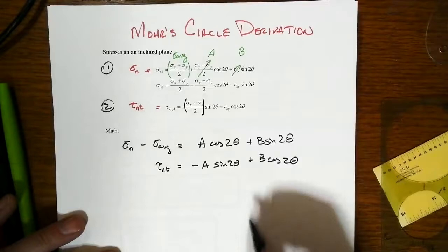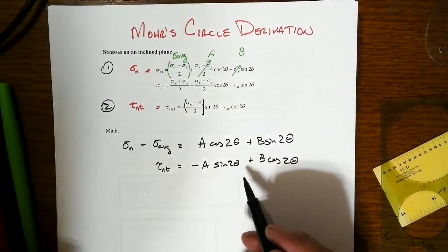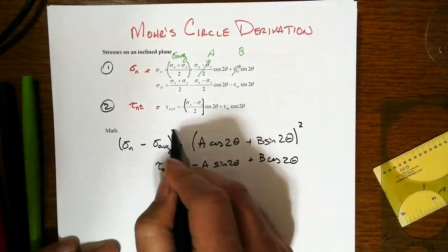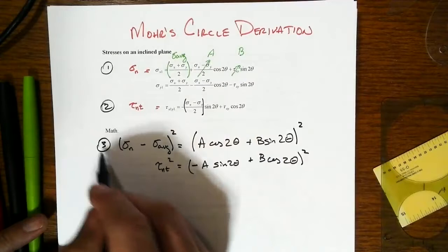Minus A times sine of two theta plus B times cosine of two theta. Now, anytime you see both sine and cosine with the same argument, you start thinking about how can you get rid of that. And of course, if we only had cosine squared and sine squared, those usually add up to one. And that's your hint about what we're going to do. We're going to square both sides of each equation.